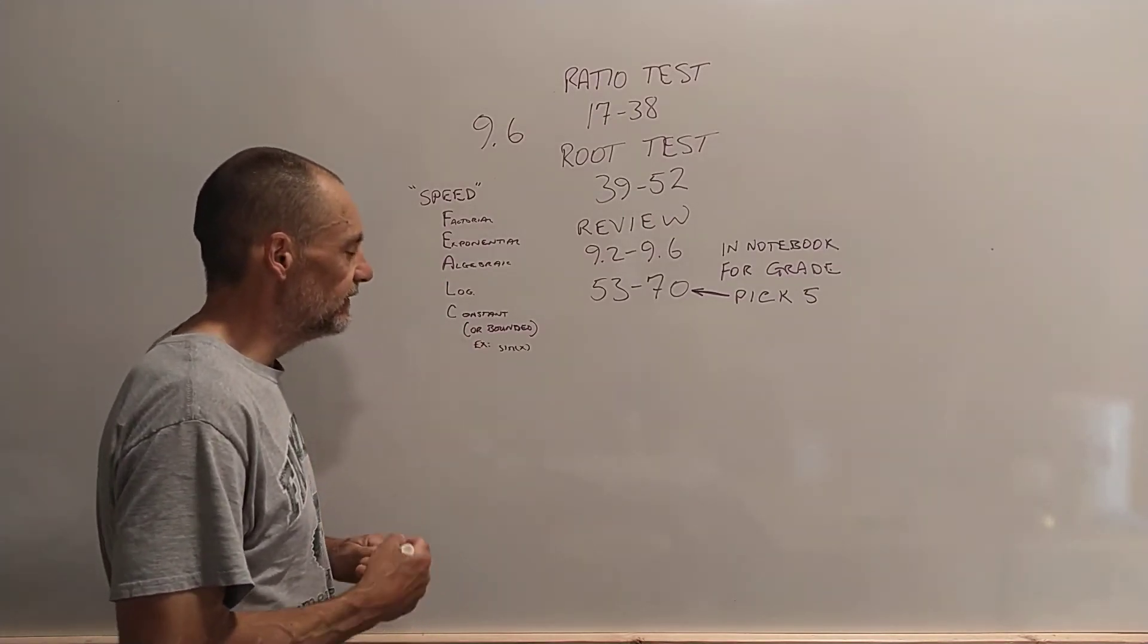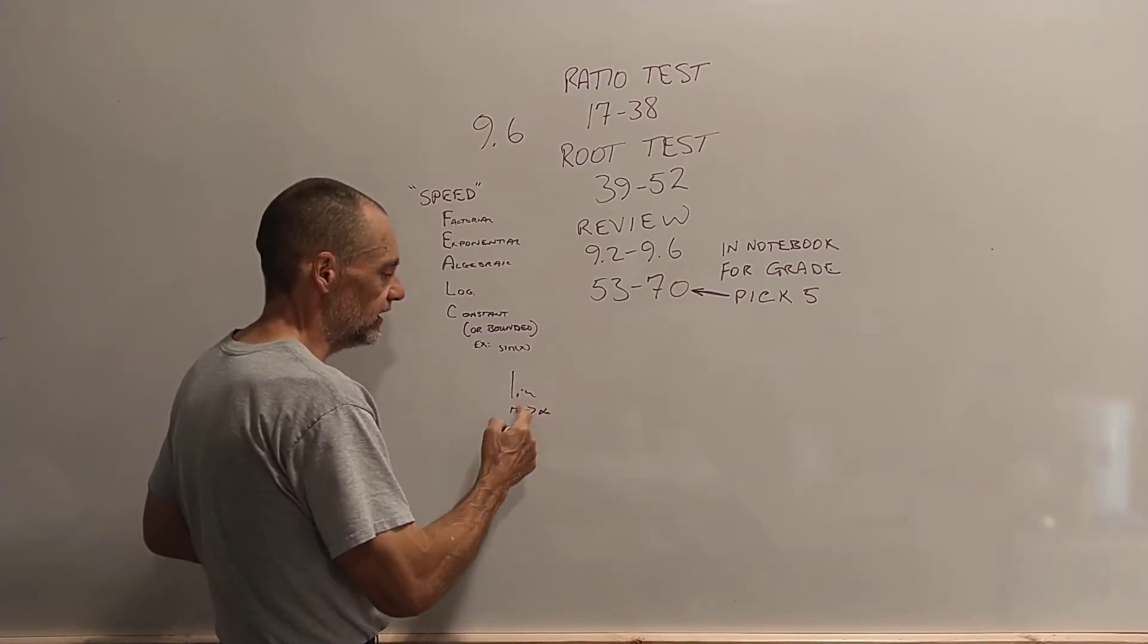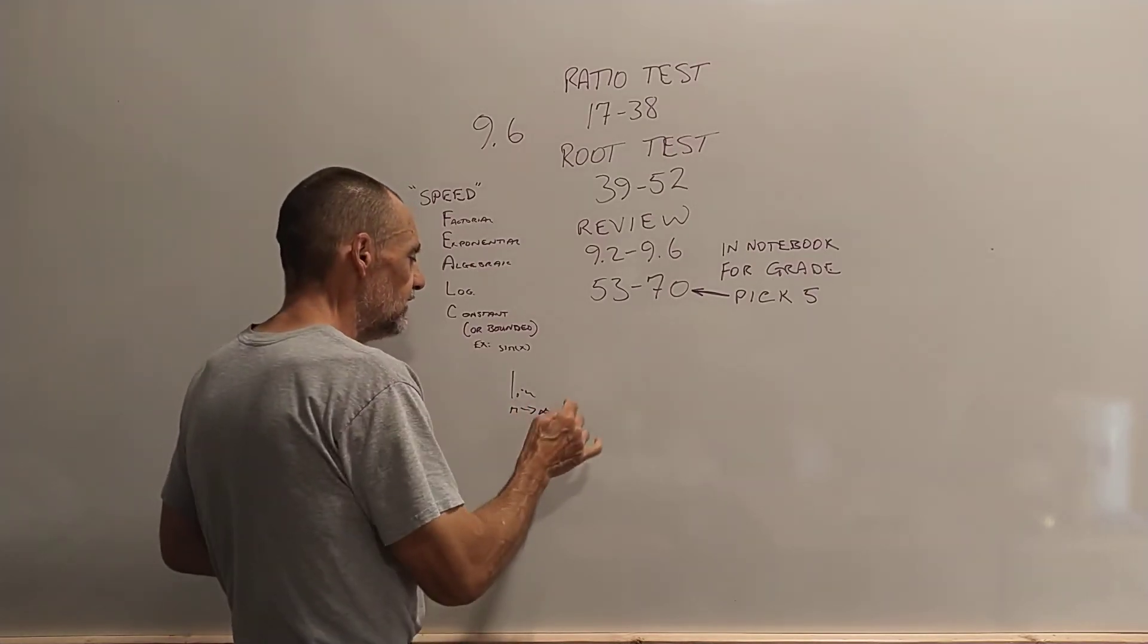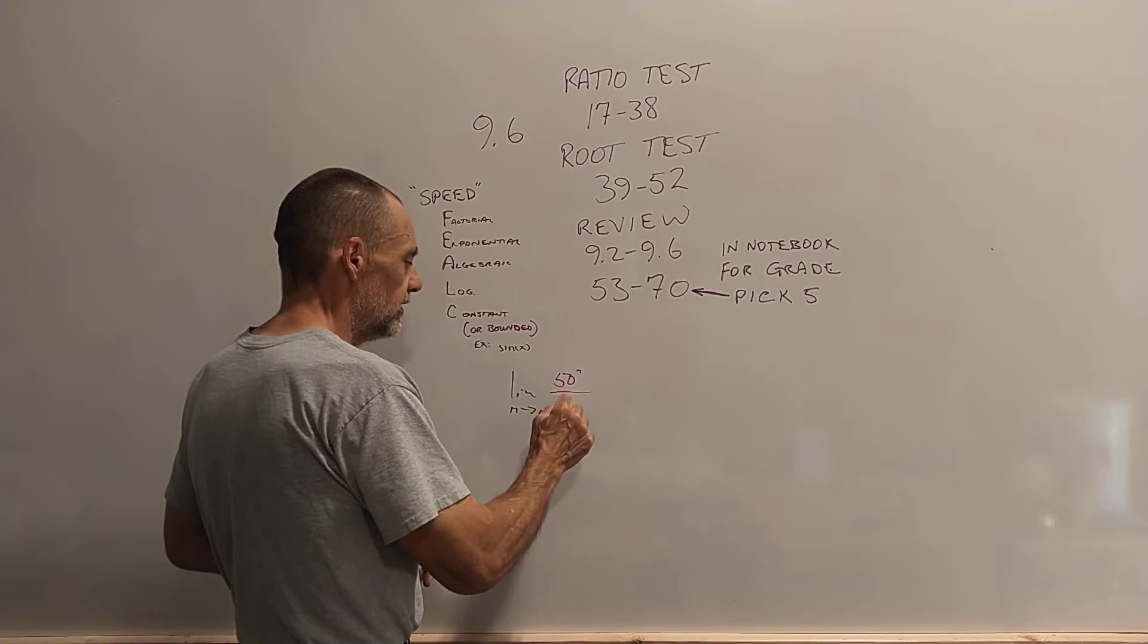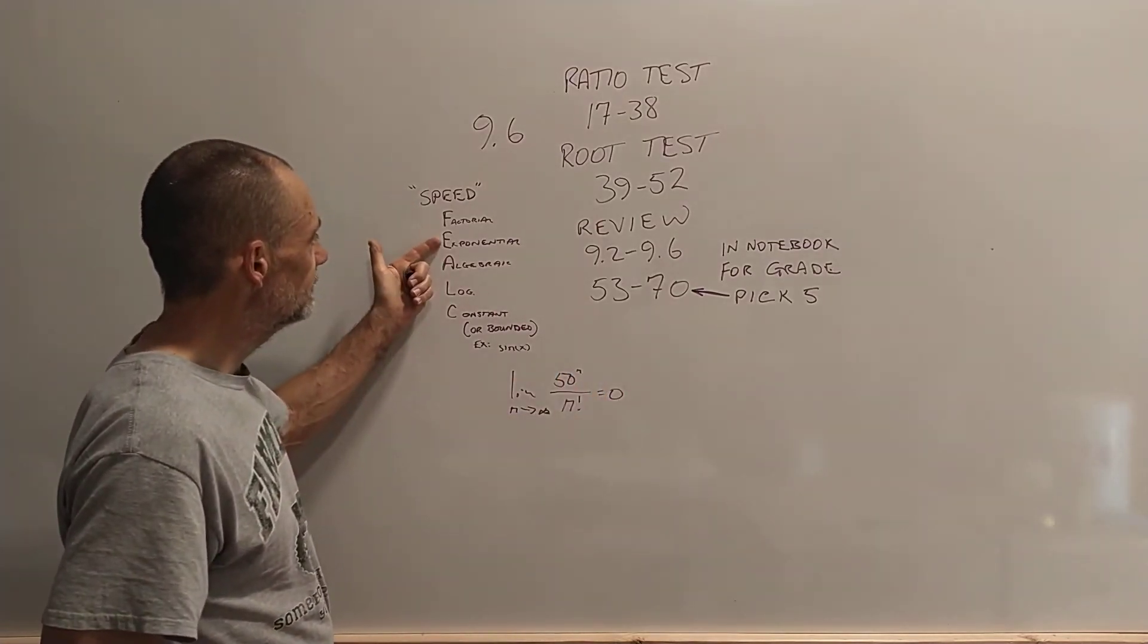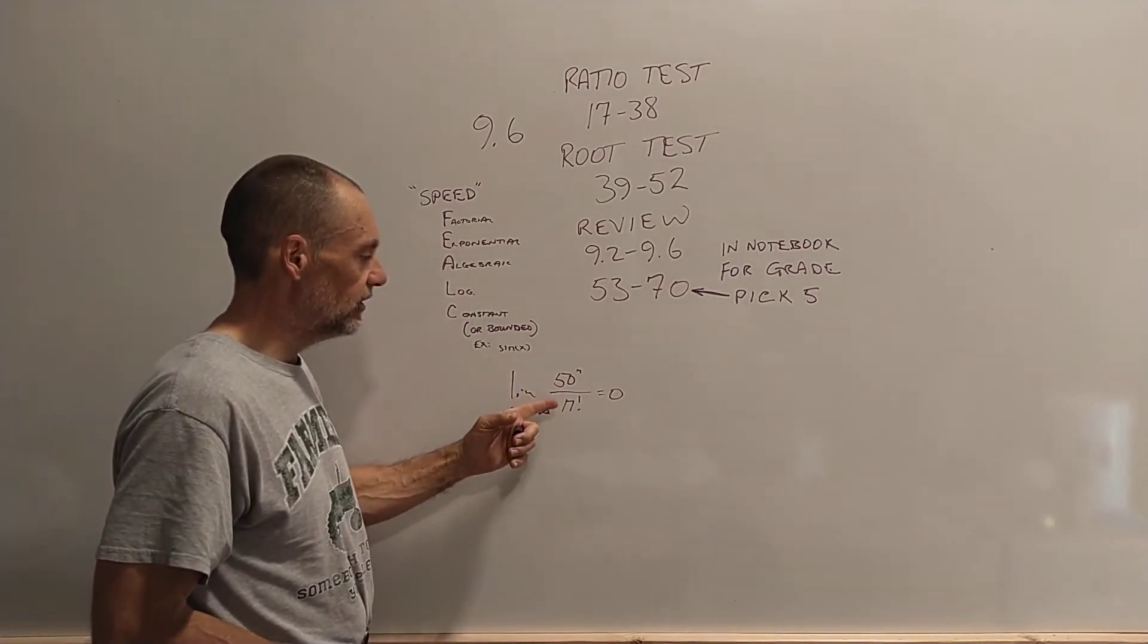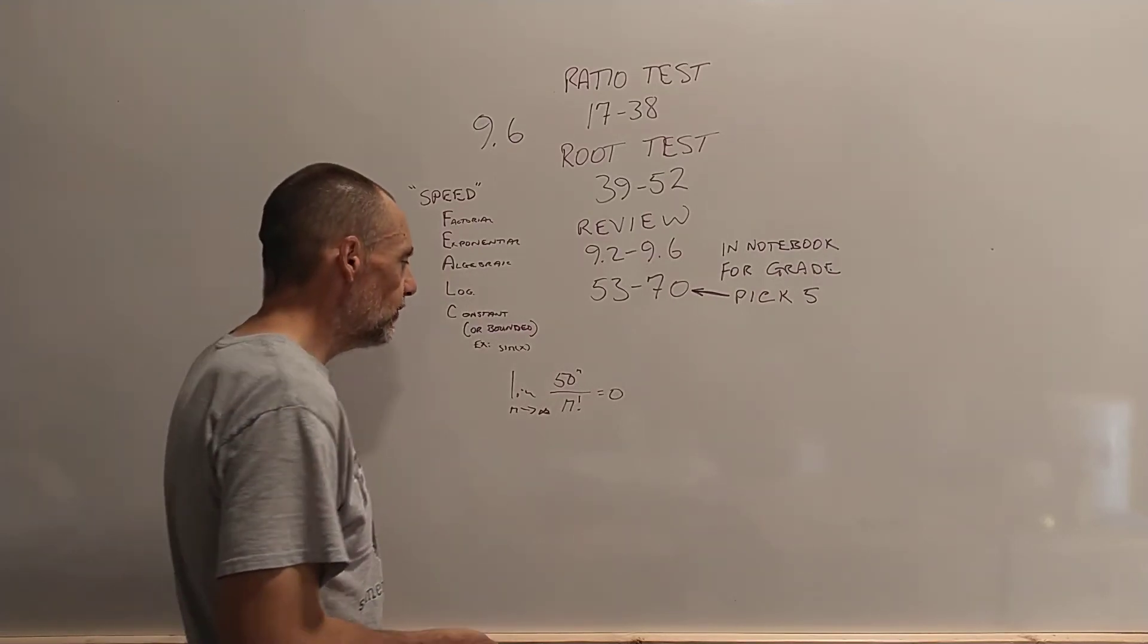And these kinds of things mean that, like, if you take the limit as n approaches infinity, and these are always dealing with limits to infinity, if you add something like 50 to the n over n factorial, this is 0, because factorial functions increase faster than exponential functions. This function's exponential, this is factorial, bottom increases faster, it goes to 0. It's a pretty quick way to do it.